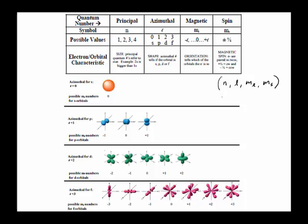For example, if you have sulfur, the electron configuration would be 1s2, 2s2, 2p6, 3s2, 3p4. That's the electron configuration, and that would be 16 electrons. Now quantum numbers will describe specifically — it's more specific than an electron configuration. It'll tell you inside the p orbital or the p sublevel where exactly the first out of those six electrons is.